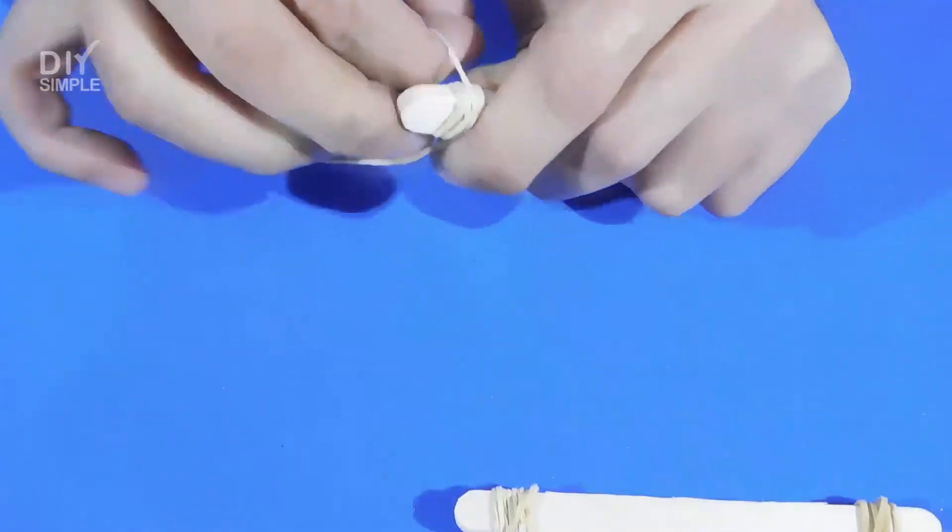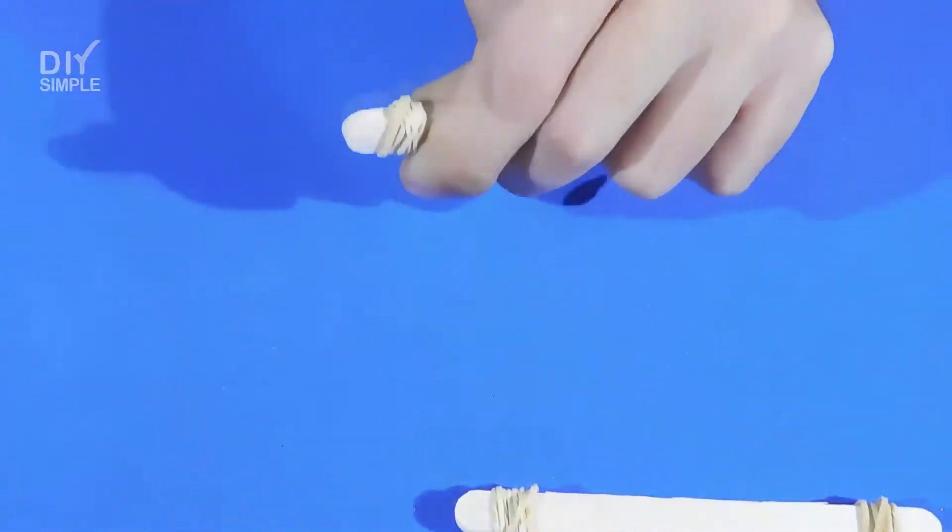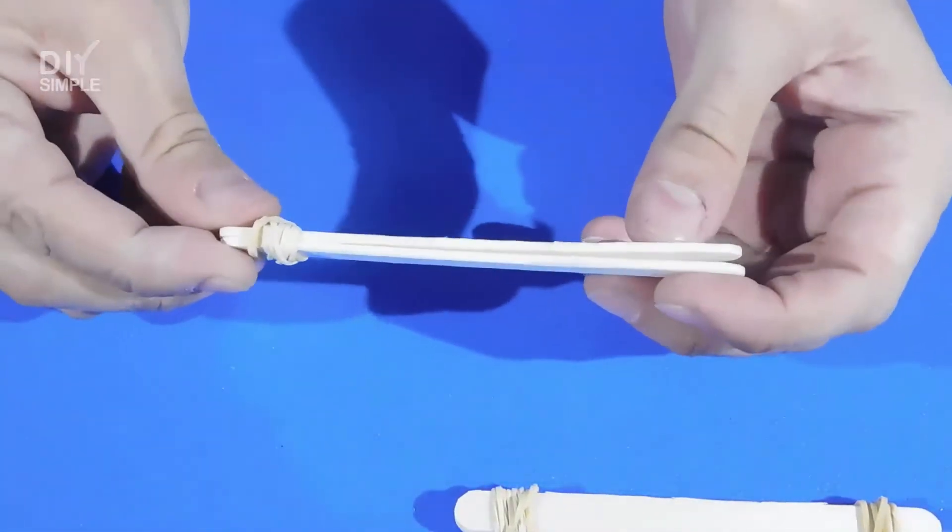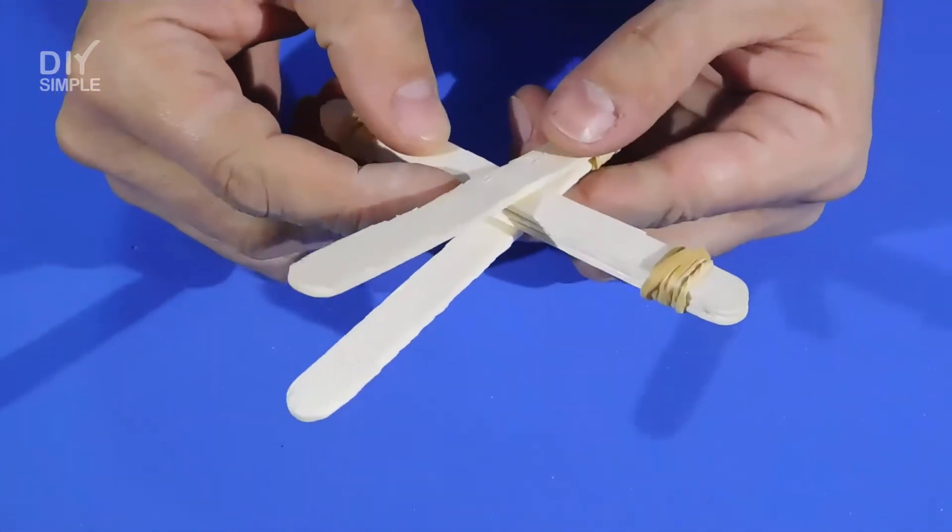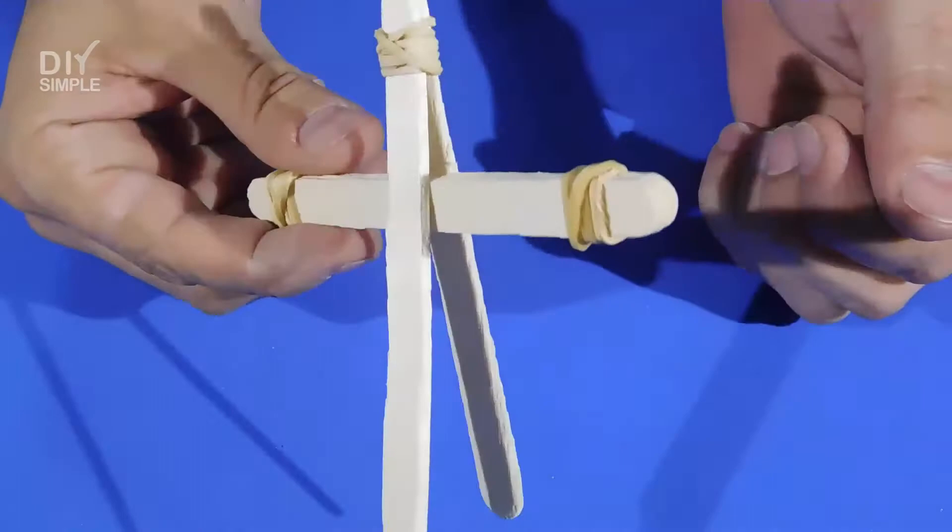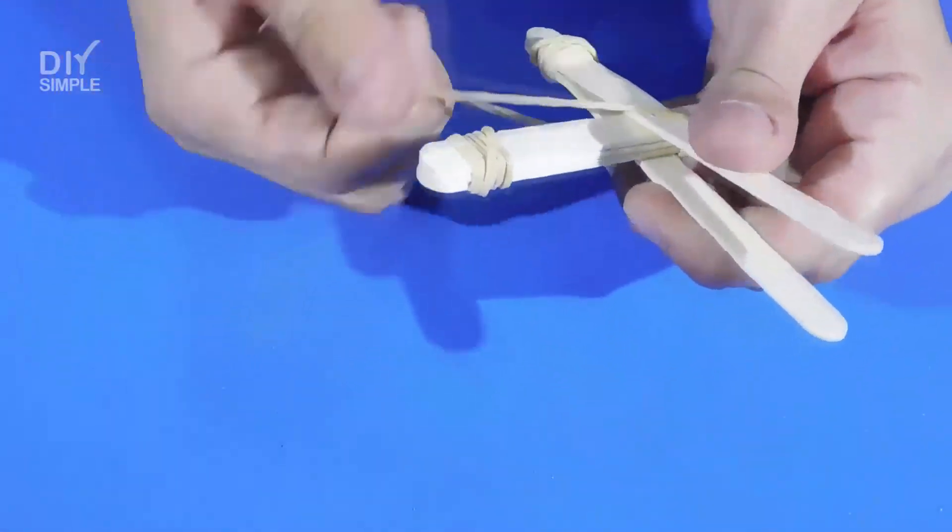Now, we take two more ice cream sticks and tie one end with a rubber band. We take the three previous sticks and place them into the two sticks as shown on screen. Then, we secure with two more rubber bands.